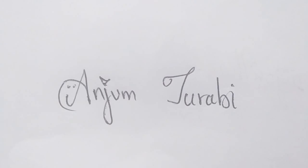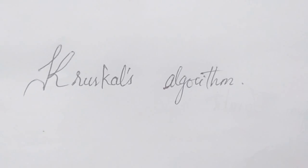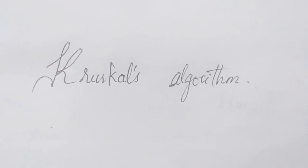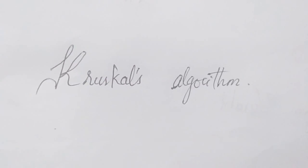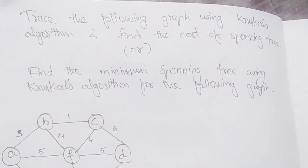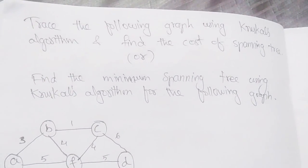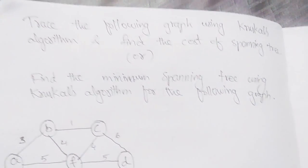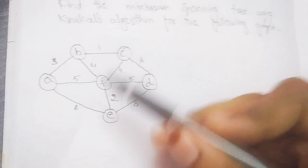Hey all, this is Anjum Tarabi and today I'm going to solve an example problem based on Kruskal's algorithm. Kruskal's algorithm is a greedy algorithm in graph theory which finds the minimum spanning tree for a connected weighted graph.